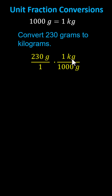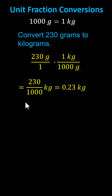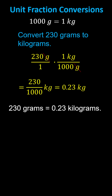We're not changing the weight by multiplying by this fraction; we're simply changing the units. Because we now have grams divided by grams, the grams simplify out and we're left with kilograms. Multiplying, we have 230 divided by 1,000 kilograms, which equals 0.23 kilograms. We now know 230 grams equals 0.23 kilograms.